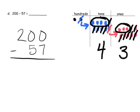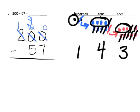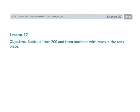Now let's do the same problem using the standard algorithm. We unbundle one of the hundreds, leaving one hundred, which gives us ten tens. Then we unbundle one of those tens, leaving nine tens and ten ones. Ten ones minus seven ones gives three ones. Nine tens minus five tens gives four tens. One hundred take away no hundreds leaves one hundred. So we get 143 both times. That's Grade 2, Module 4, Lesson 27 — subtracting with a lot of unbundling, especially because there are zeros in our place values.